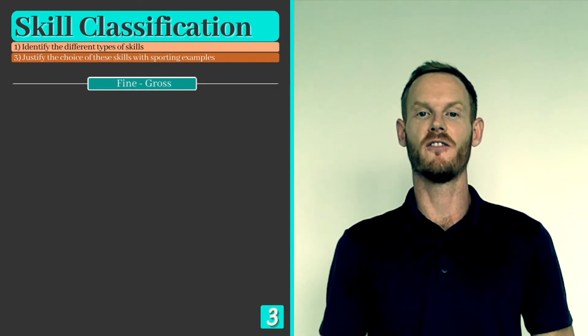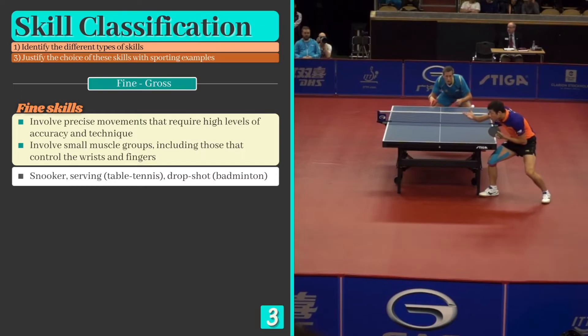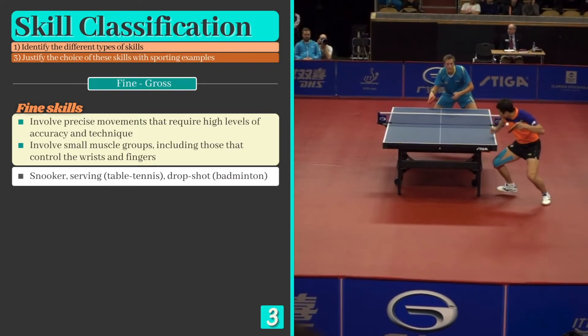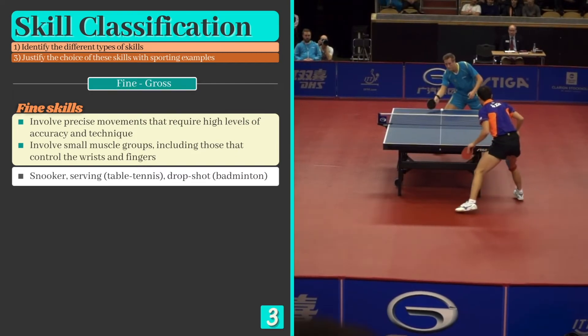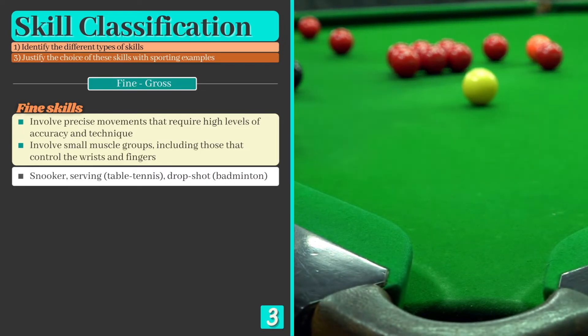Finally, skills can be either fine or gross in nature. Fine skills involve precise movements that require high levels of accuracy and technique. They also tend to involve small muscle groups that control the fingers and wrists. Archery, snooker and serving in table tennis are great examples of fine skills.